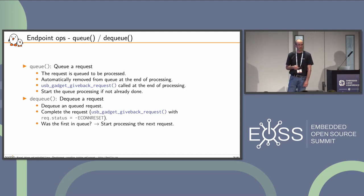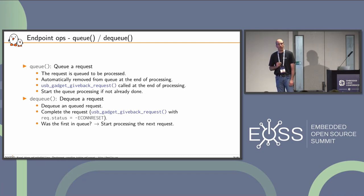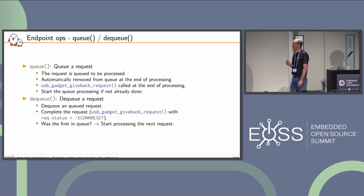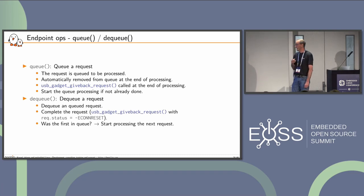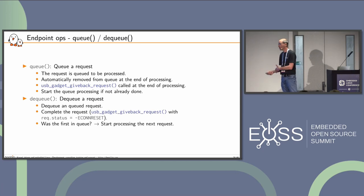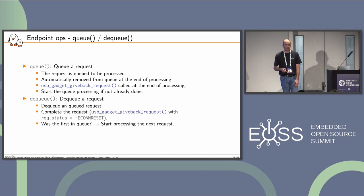Queuing a request: requests are queued per endpoint for processing. When the upper layer wants to process a request, it calls queue with the request. Requests are automatically removed from the queue at end of processing by the UDC driver itself. At end of processing, we signal completion to the core using give back request. When a request is queued, start processing the queue if not already running. On dequeue, the core asks us to remove a previously queued request; we dequeue it and complete it using give back request with status ECONNRESET. If we dequeue the first one in the queue, start processing the next one.